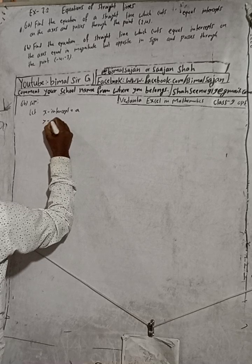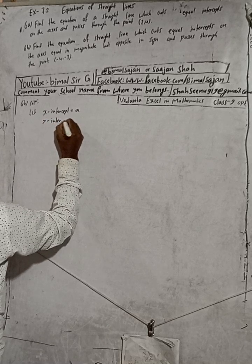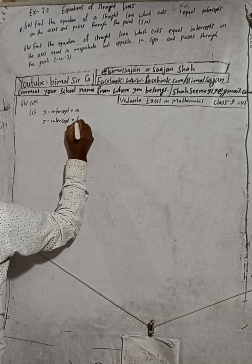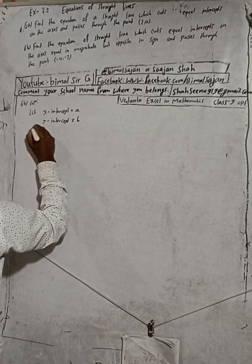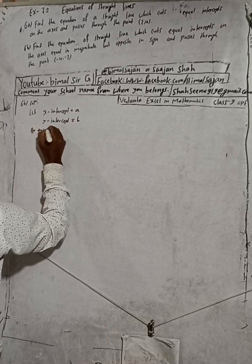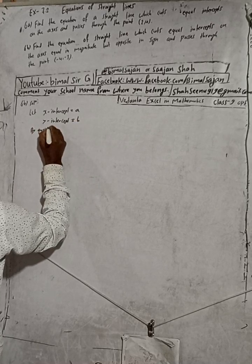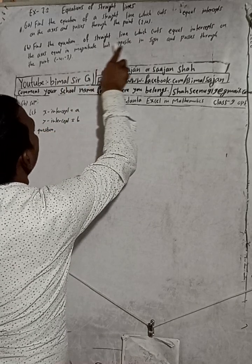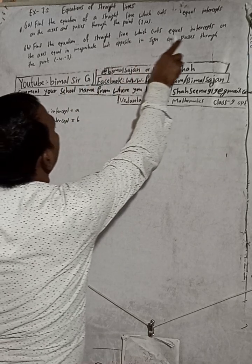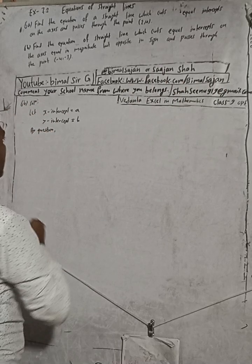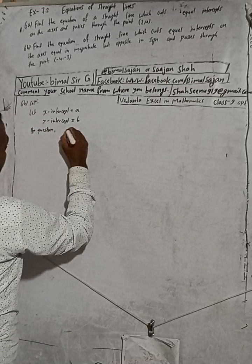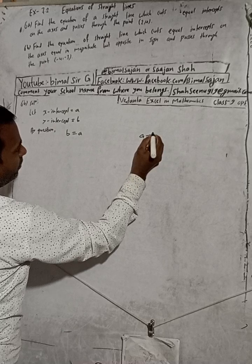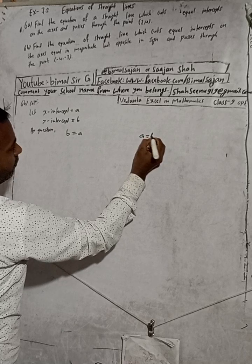Now, by the question: when the question says 'equal intercepts,' that means B is equal to A, or A is equal to B. You can write either A = B or B = A — both are the same.